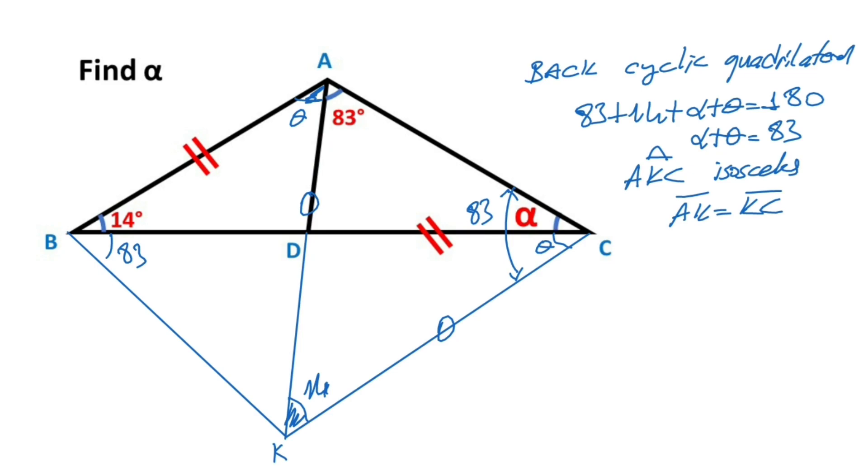And then if you focus on ABK triangle, this triangle and DCK triangle are congruent. Because they have same two sides and angles which are between these two equal sides. So according to side angle side, these two triangles are congruent.